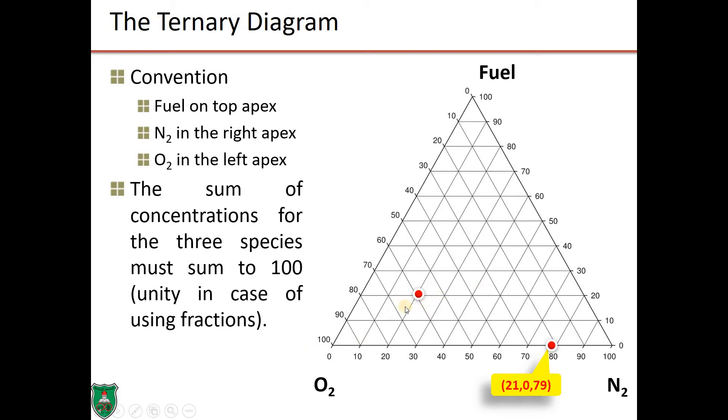Let's look at another point. Notice that this point is closer to the oxygen apex, but still, it's not on the 0% fuel. So, if we look at the oxygen, once again, 100, 90, 80, 70, and 60. The intersection at 60 with the point is 60% oxygen. If we look at the fuel right now, this is 100, 90, 80, 70, 60, 50, 40, 30, and 20. 20% fuel intersects with this point, which means we have 20% fuel. So, nitrogen, we have 100, 90, 80, 70, 60, 50, 40, 30, and 20. So, this triplet is 60, 20, 20. 60% oxygen, 20% fuel, and 20% nitrogen.